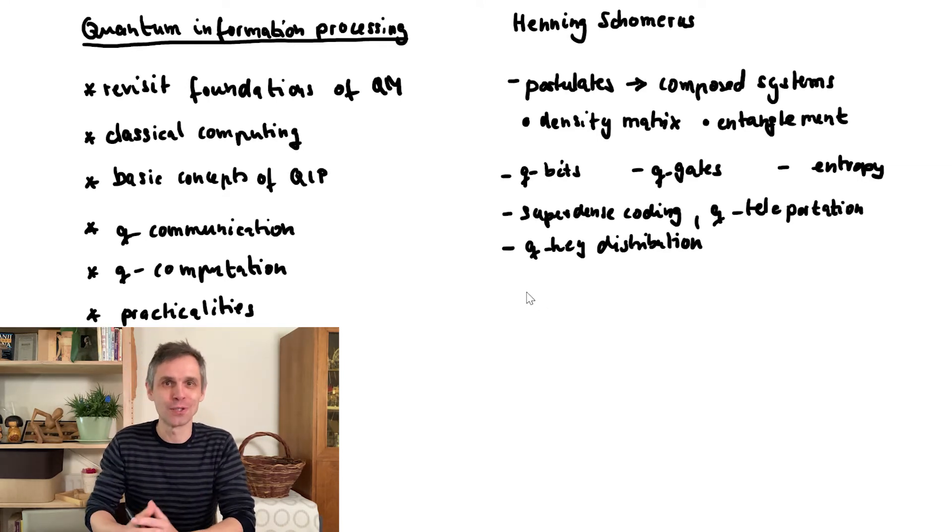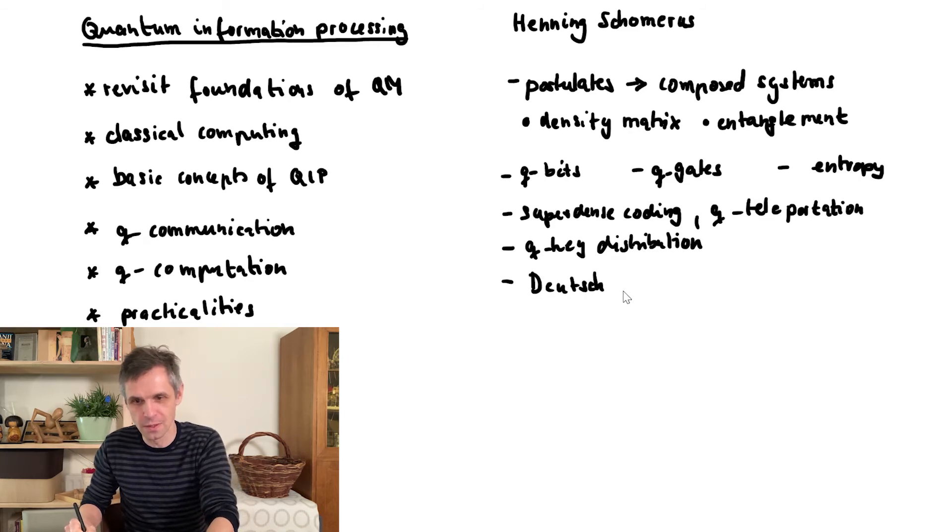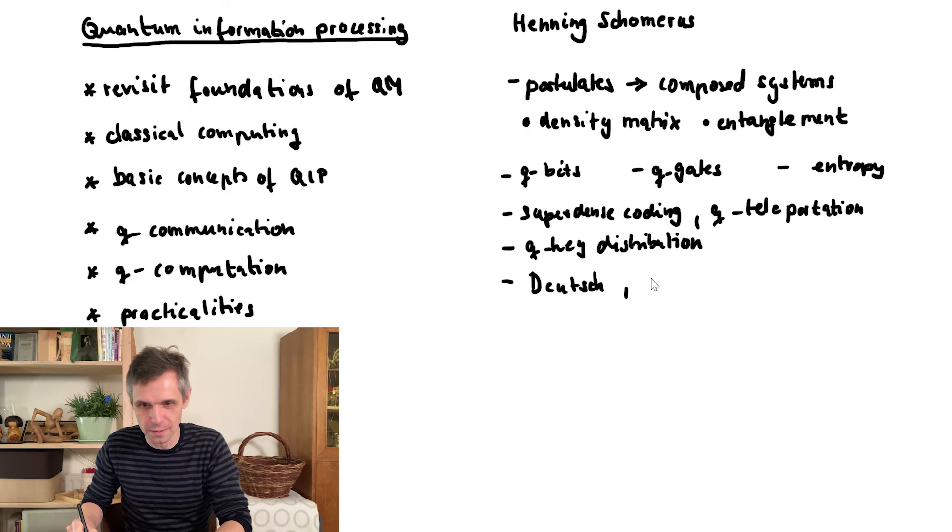And then we are going to move on to quantum computation. And then we are going to have a look at a sequence of algorithms first starting with the Deutsch algorithm, which is really the conceptually simplest algorithm in quantum computation. Then at the Grover algorithm for quantum searches, then the Shor algorithm for prime number factorization.